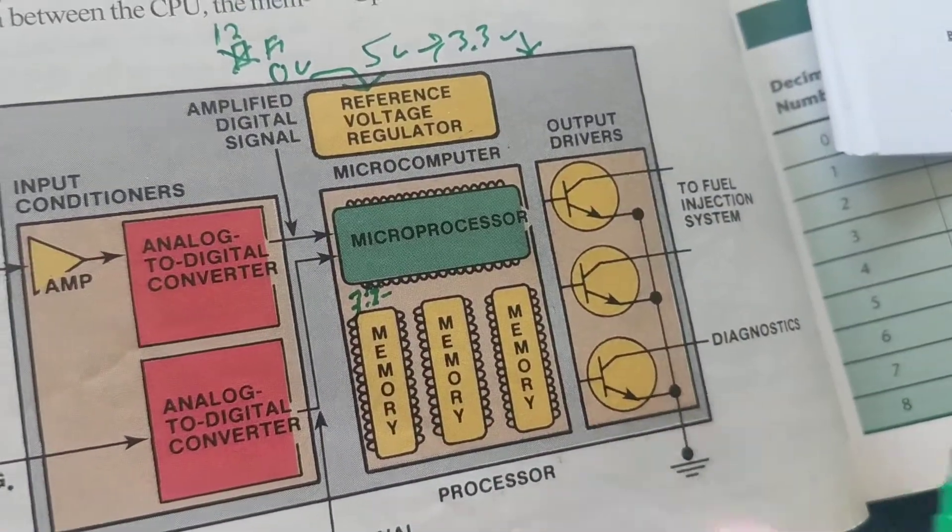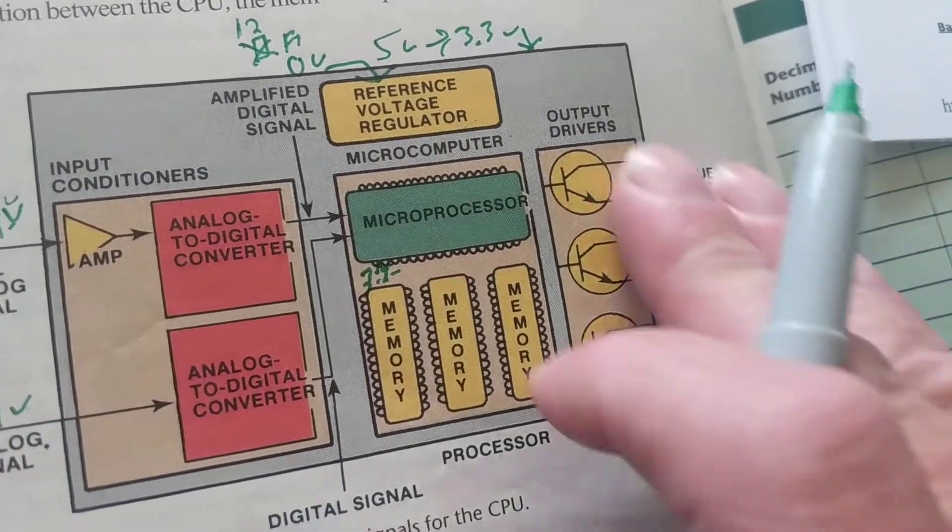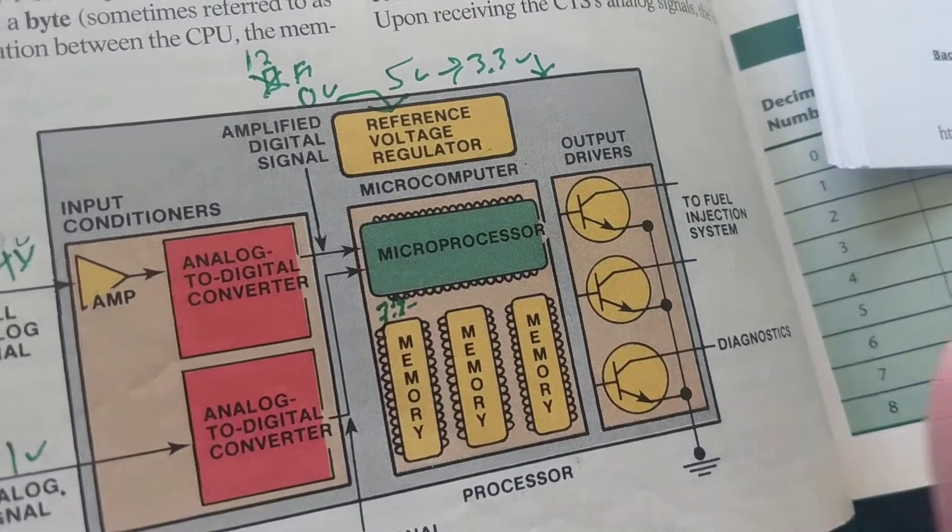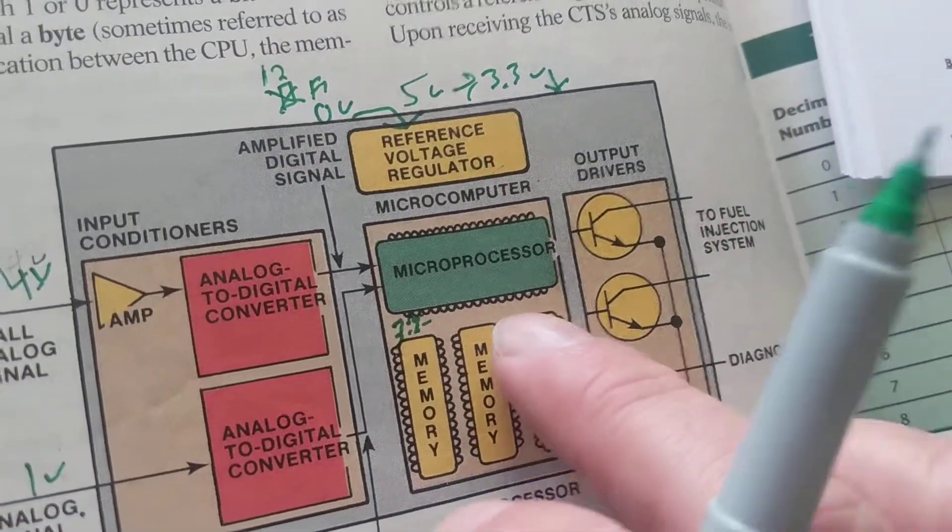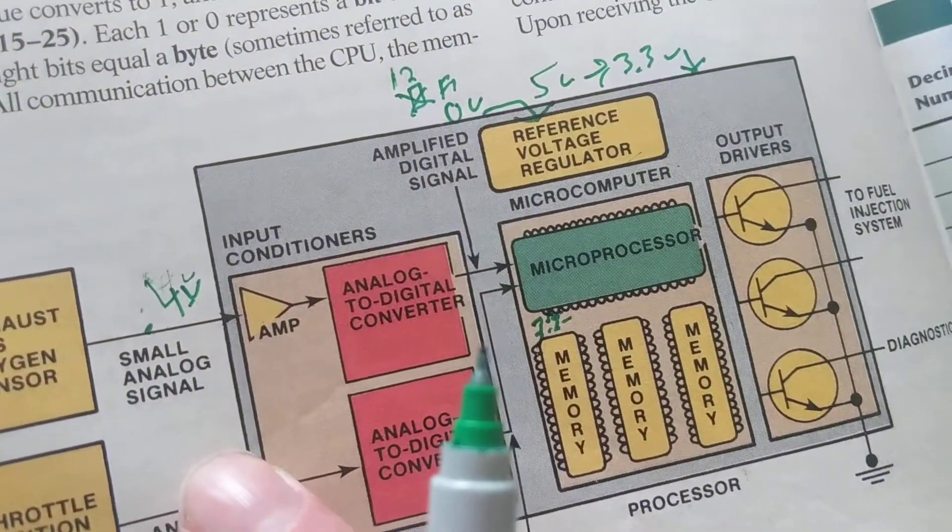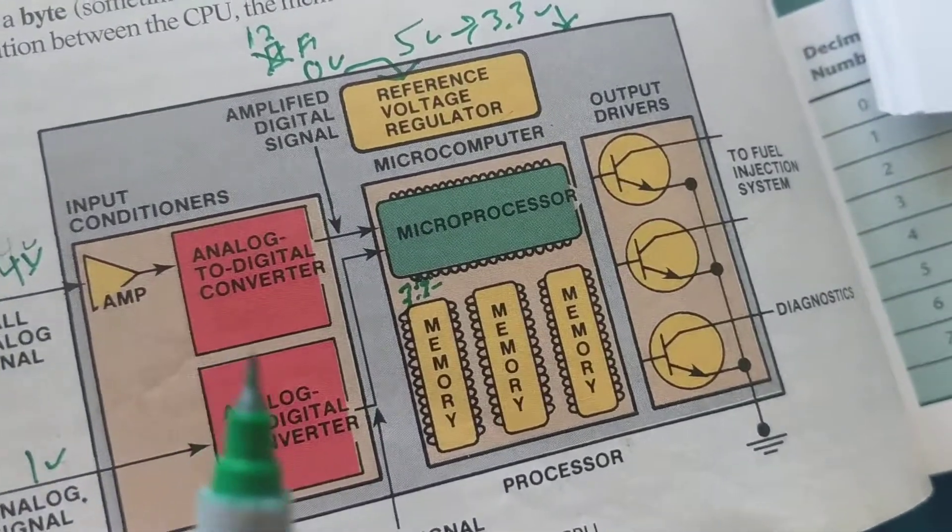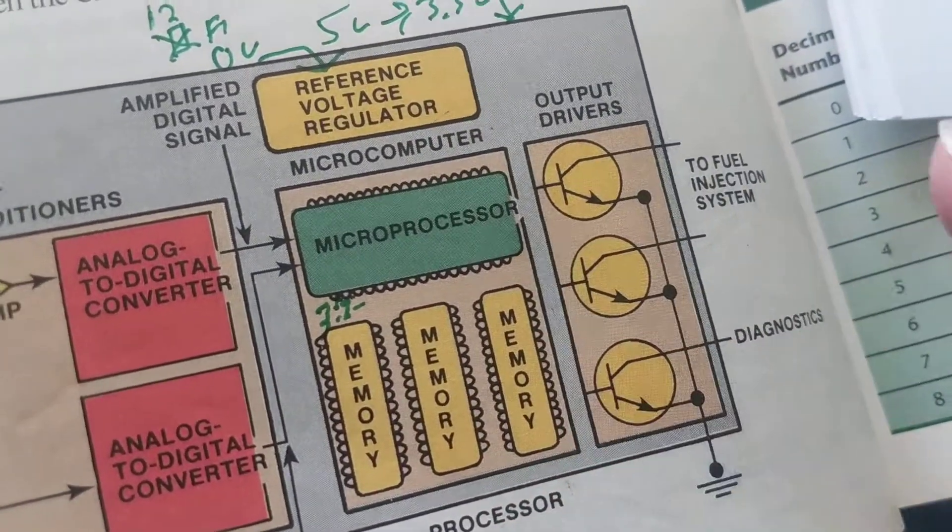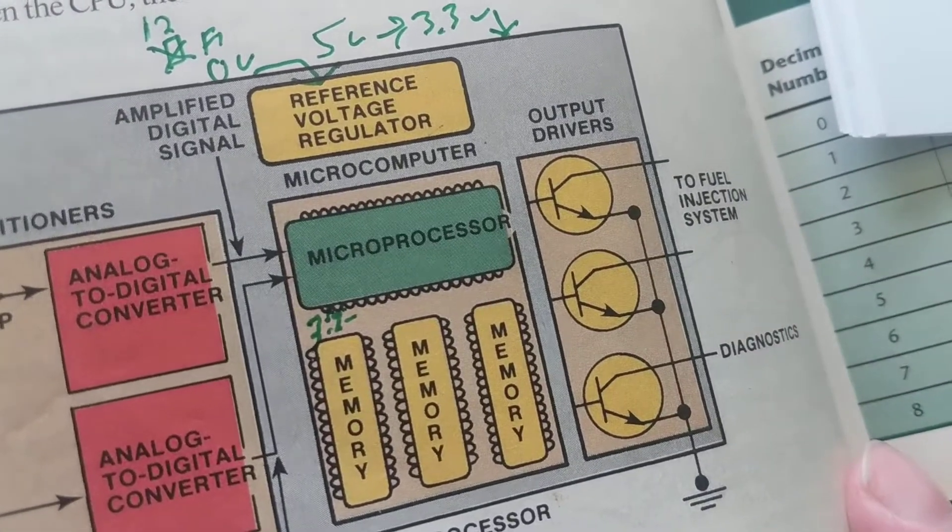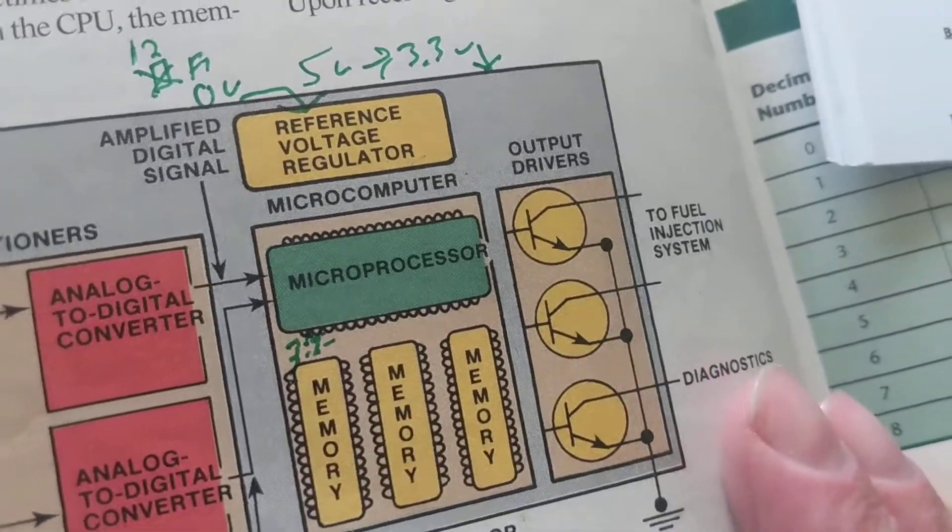This is the basics of a PCM board, a body control module, transmission control module, lighting control module. There's always a processor that does the calculations. Based on those calculations, those inputs from all the sensors—not just these two, these are just examples—it will react. It will turn either a fuel pump on or off, a starter motor on and on, by giving a ground, an actuator, a solenoid in a transmission.